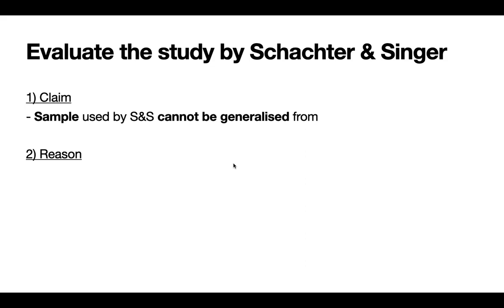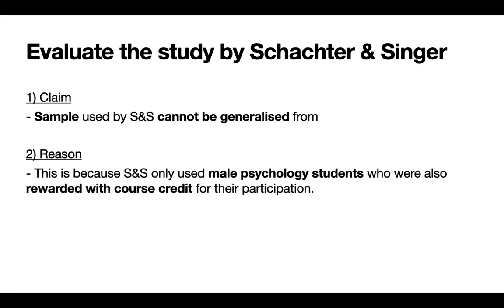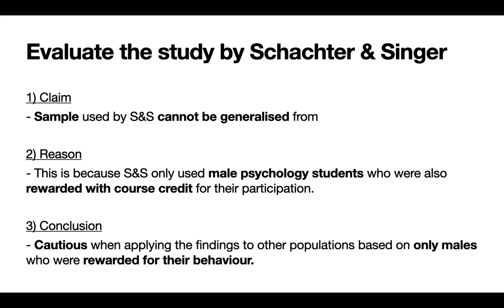Let's start with this claim: the sample used by Schachter and Singer cannot be generalized from. So I'm arguing that their sample is not generalizable. How do I add to that answer? I give a reason: this is because Schachter and Singer only used male psychology students who were also rewarded with course credit for their participation. That's why they're not so generalizable — they're very specific. In conclusion, please be cautious when applying the findings to other populations based only on males who were rewarded for their behavior.